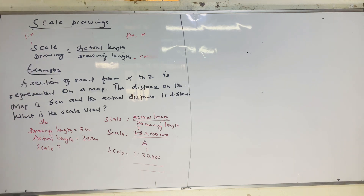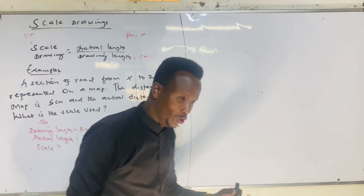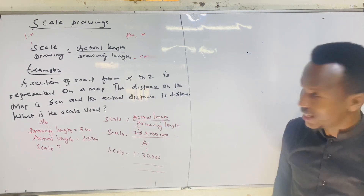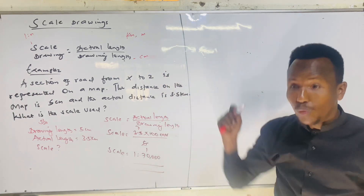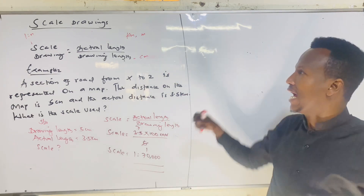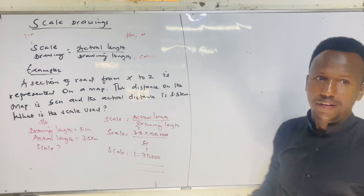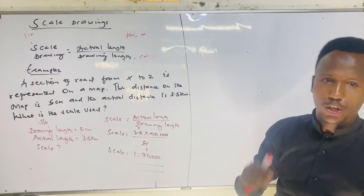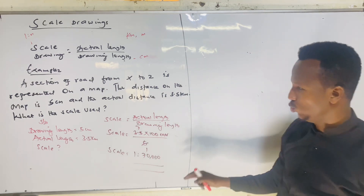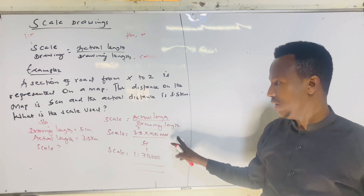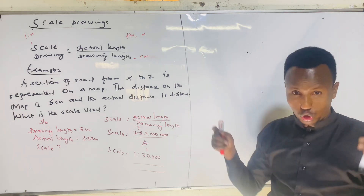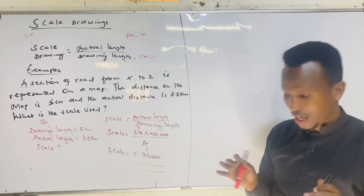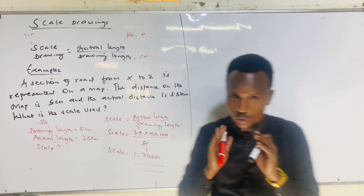This is how we get the scale. In our next class, we will see how to find the actual length and the drawing length given the scale and one of those values. Remember: the actual distance will be in km or m, and you convert to cm — multiply by 100,000 for km or by 100 for m. Make sure you subscribe to the YouTube channel and share with your friends. Until next time, brothers and sisters, wherever you are on this planet Earth.